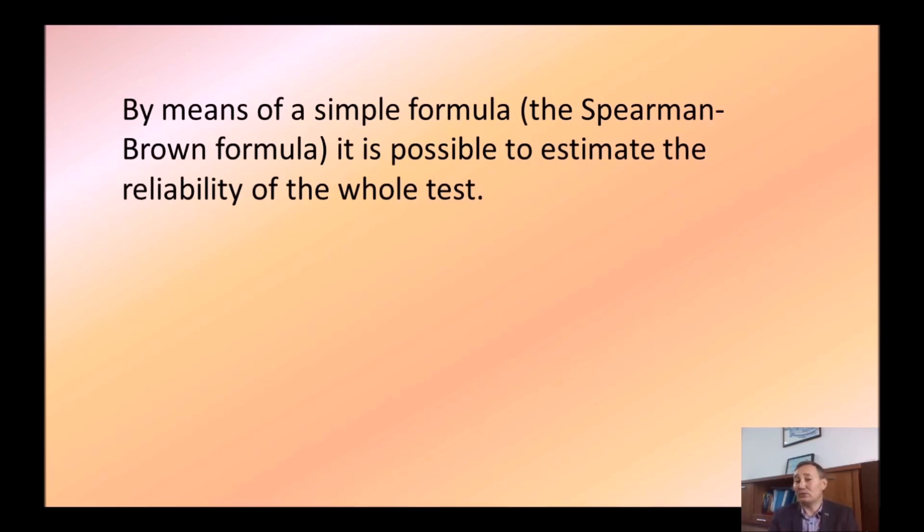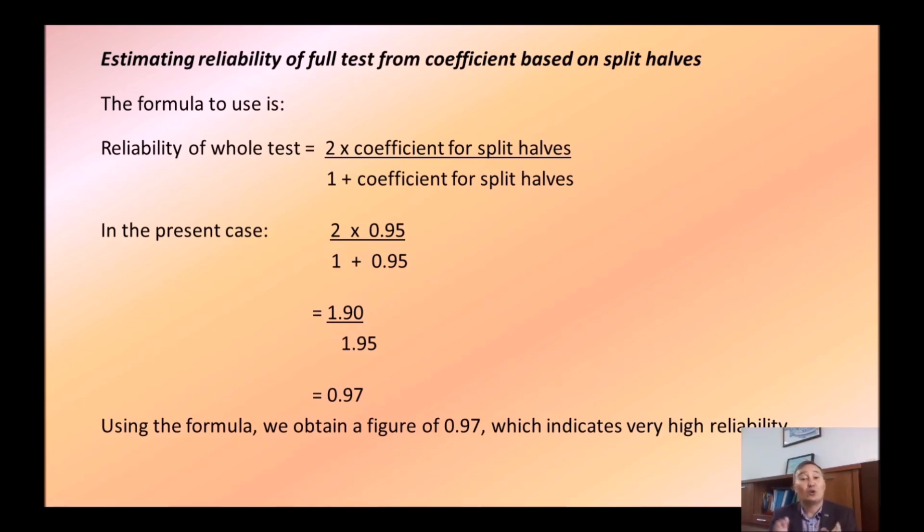Next, we use a simple formula by Spearman-Brown to calculate the reliability coefficient of the whole test. Because in the beginning, we only obtained reliability coefficient of two halves separately. Alright? So, here it is. This is the formula. Two times the coefficient for split halves. Remember, it was point zero point something. In our case, it's zero point 95. Divided by one plus, again, zero point 95. And we obtain the number 0.97, which is very high reliability. As I've mentioned before, we cannot achieve number 1 for reliability coefficient, this is statistically impossible, but still we can obtain very high reliability coefficient as in this example.